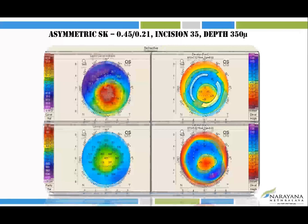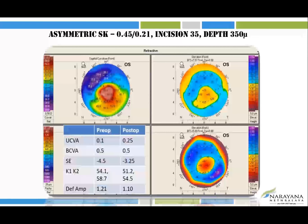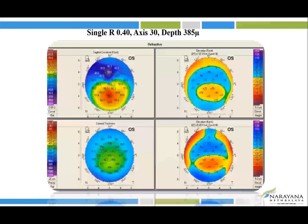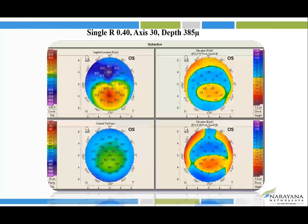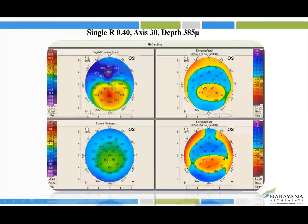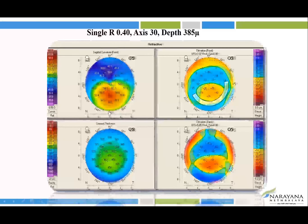For a single ring, a typical example is post-LASIK ectasia with a relatively flat superior area. Since the superior area is already flat, a single ring in the inferior position is good enough to achieve a good outcome without further flattening the superior cornea.